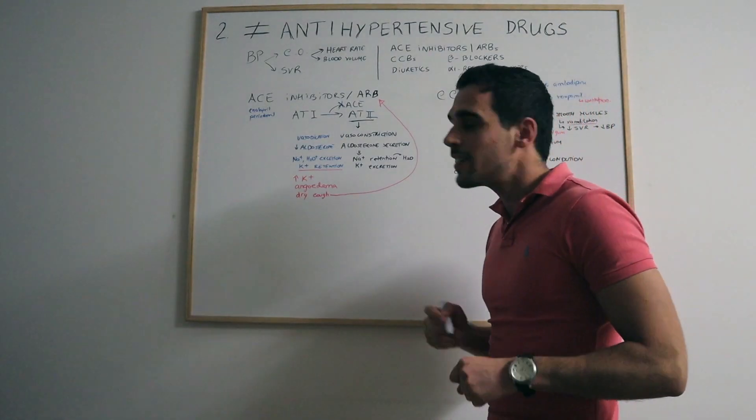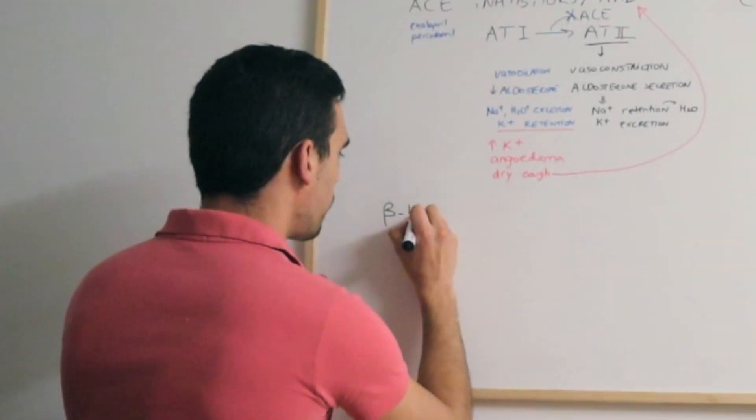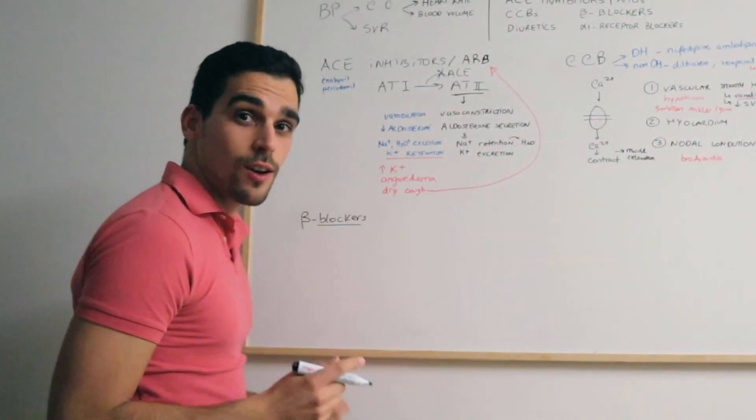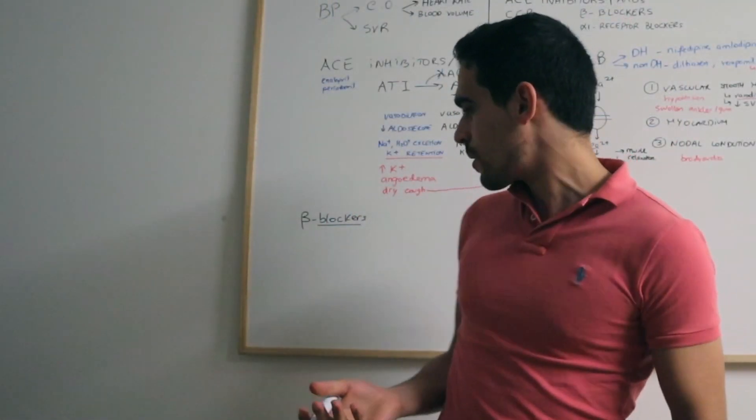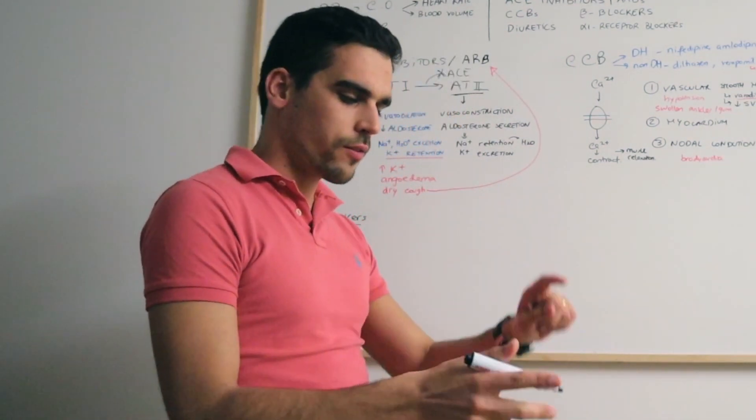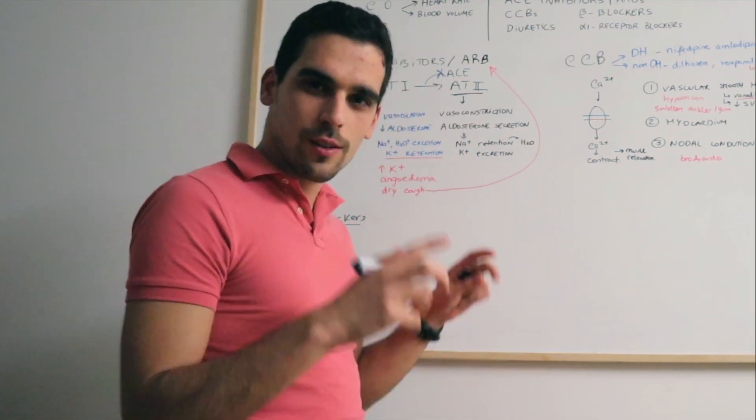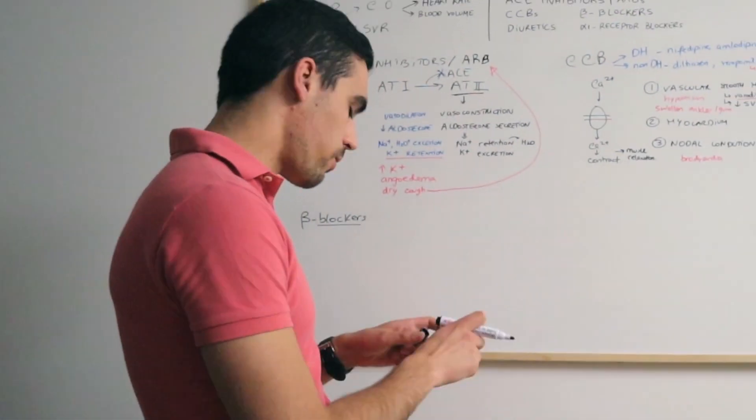Then the next class is the beta blockers. There are many types of beta blockers. We've got atenolol, bisoprolol, carvedilol, nadolol, sotalol. So there are many 'lol' drugs, which are the beta blockers.